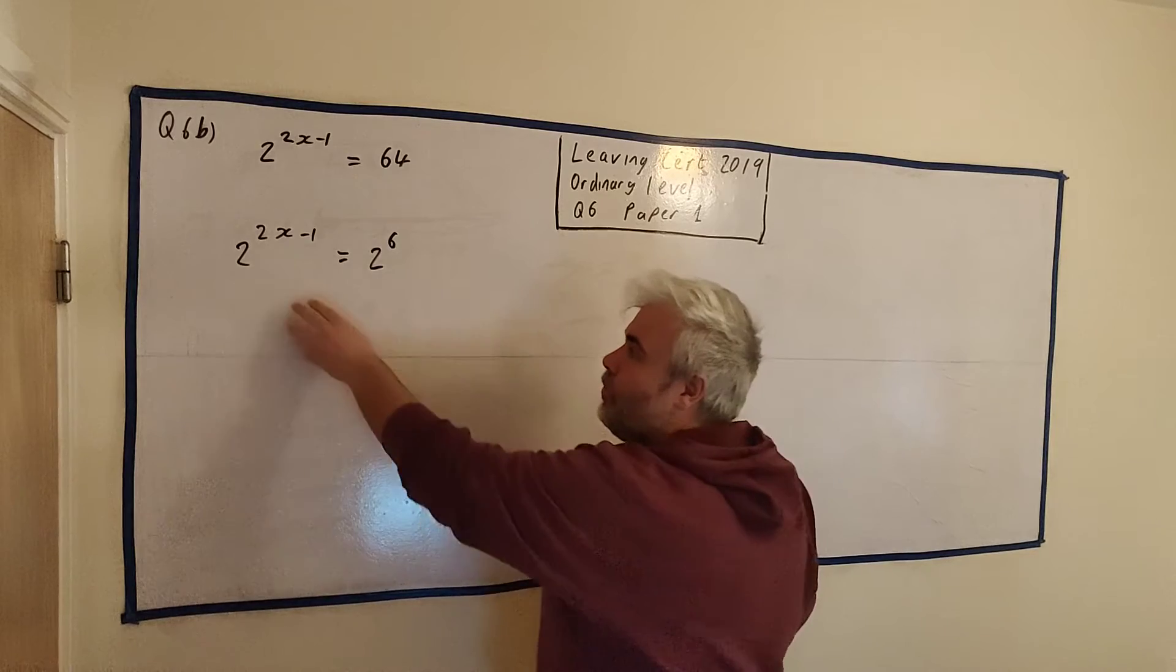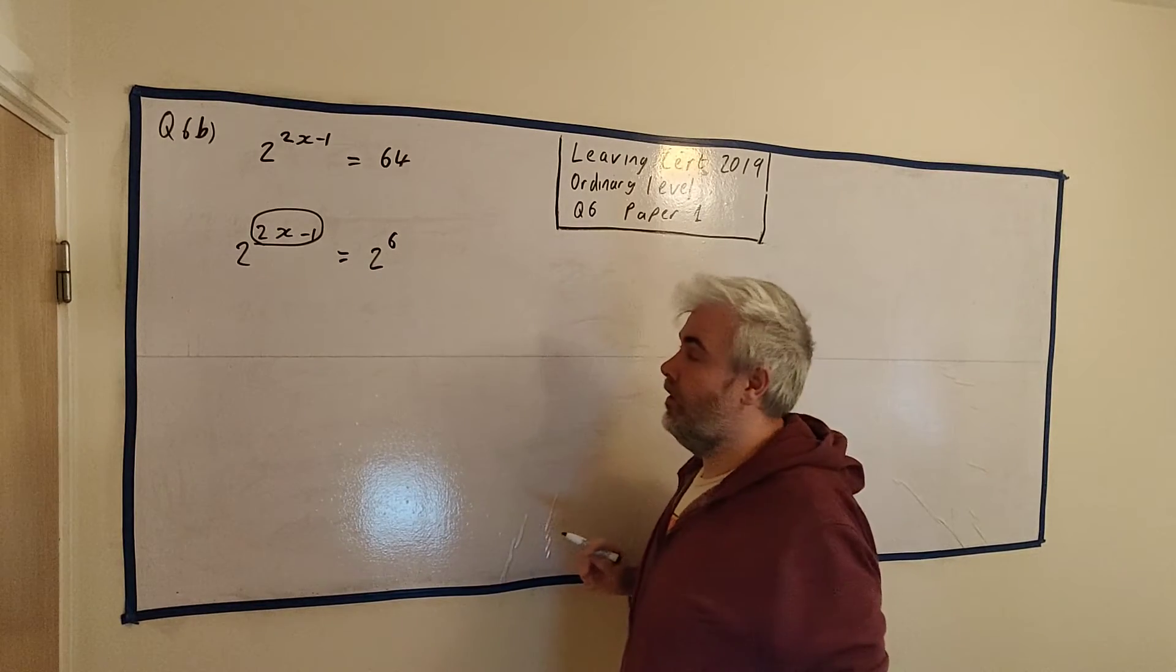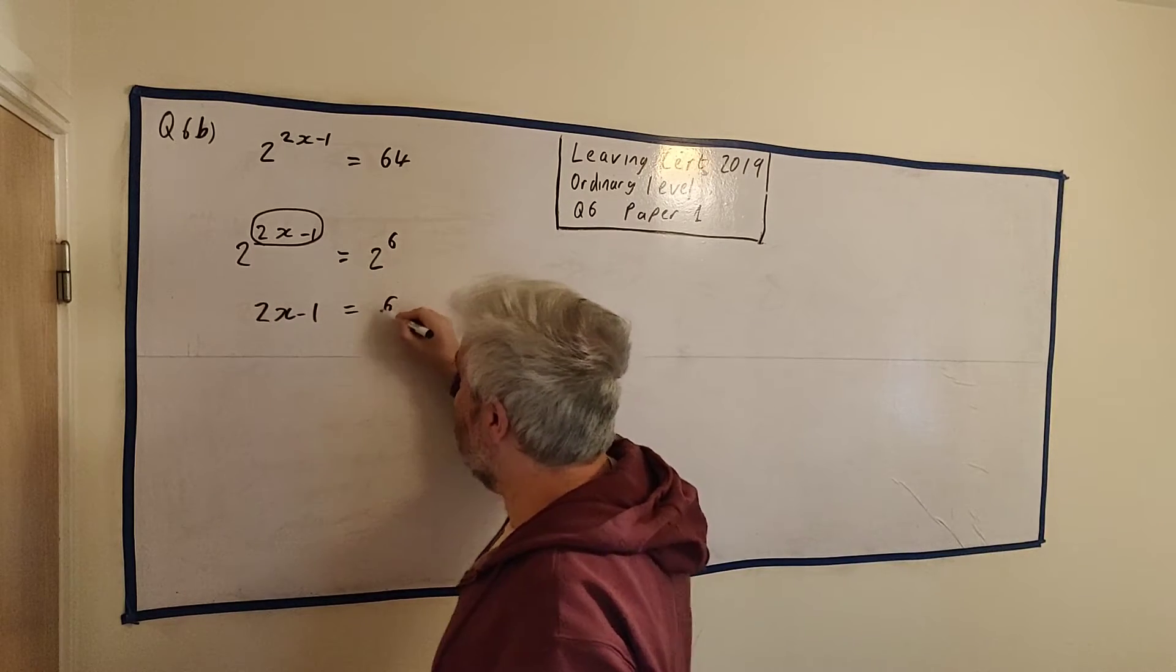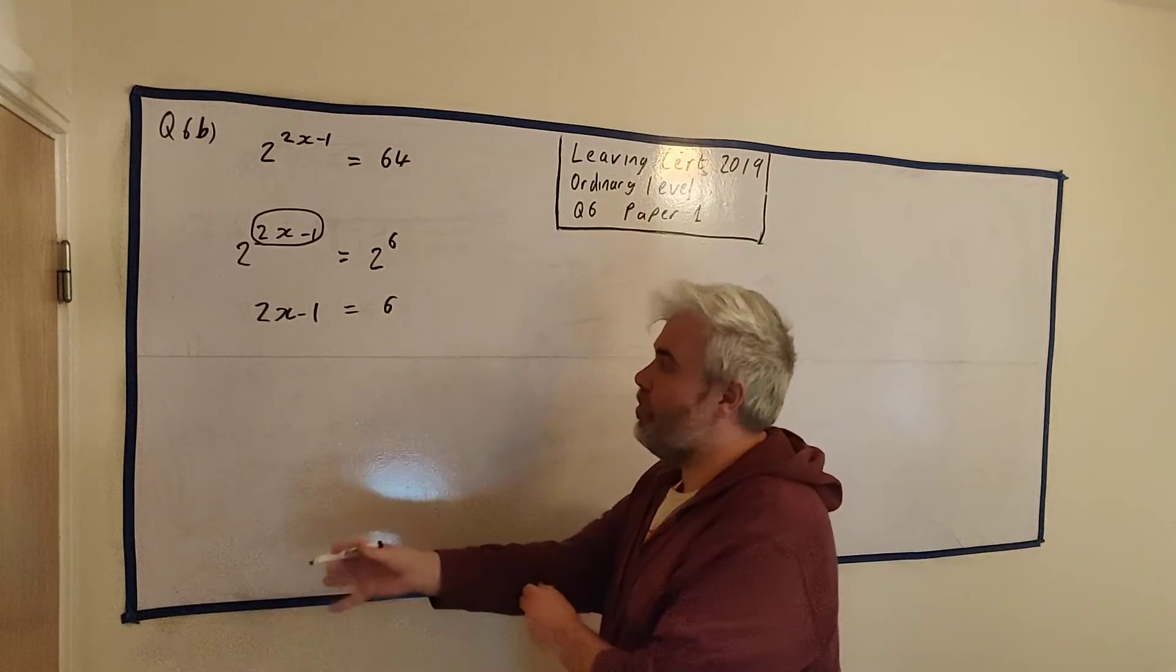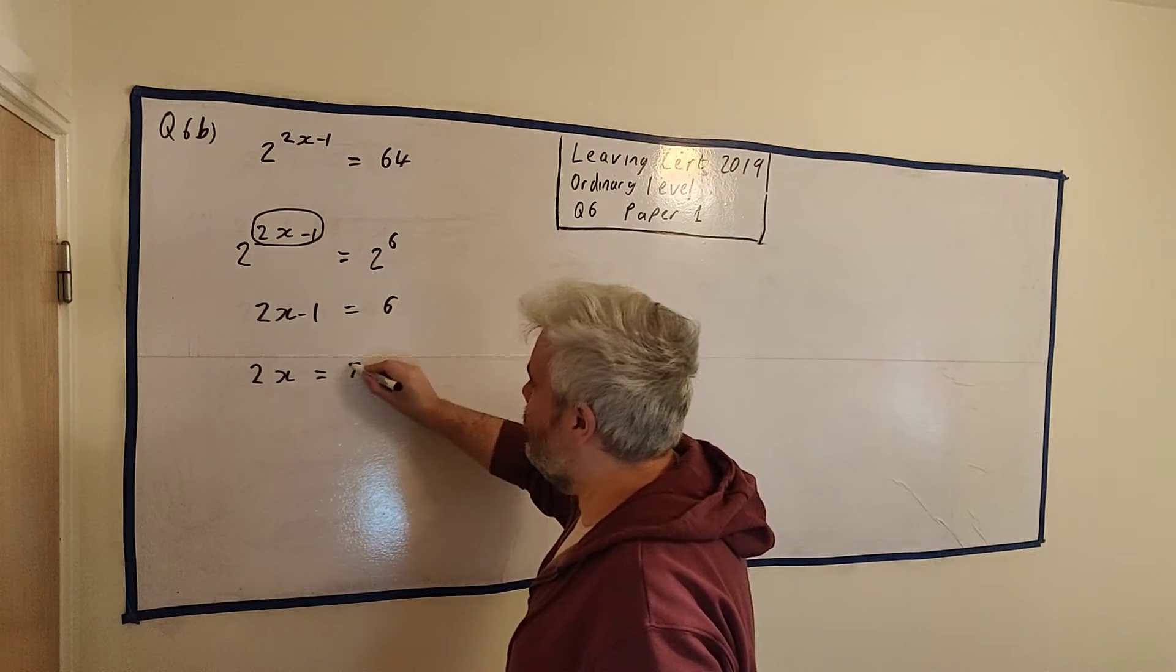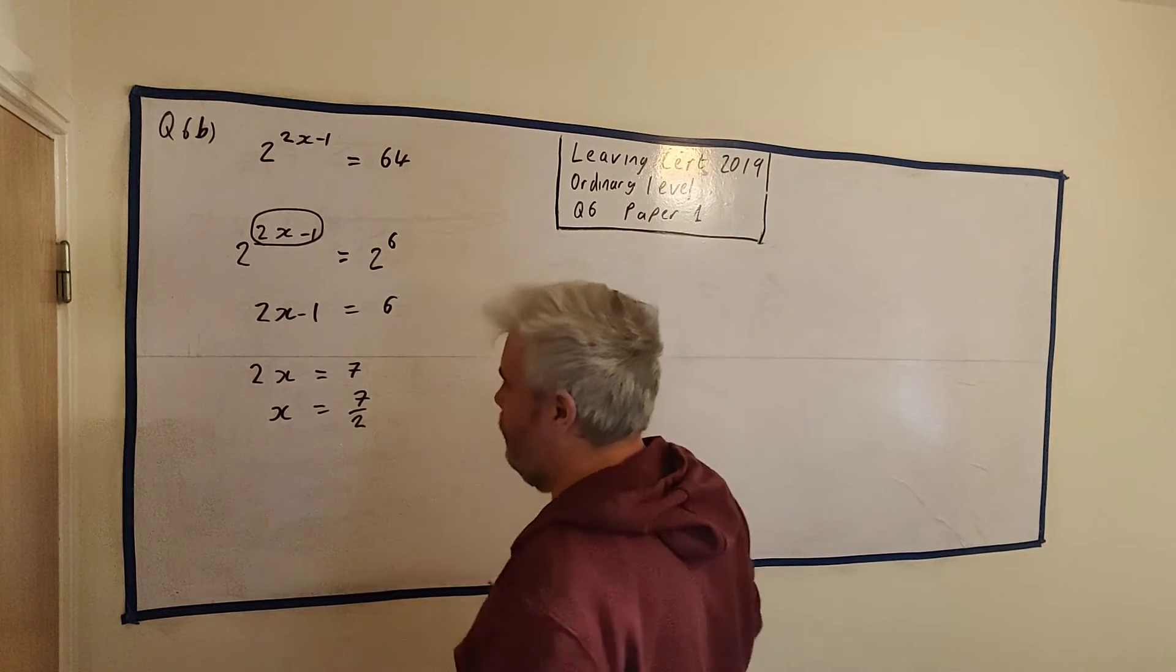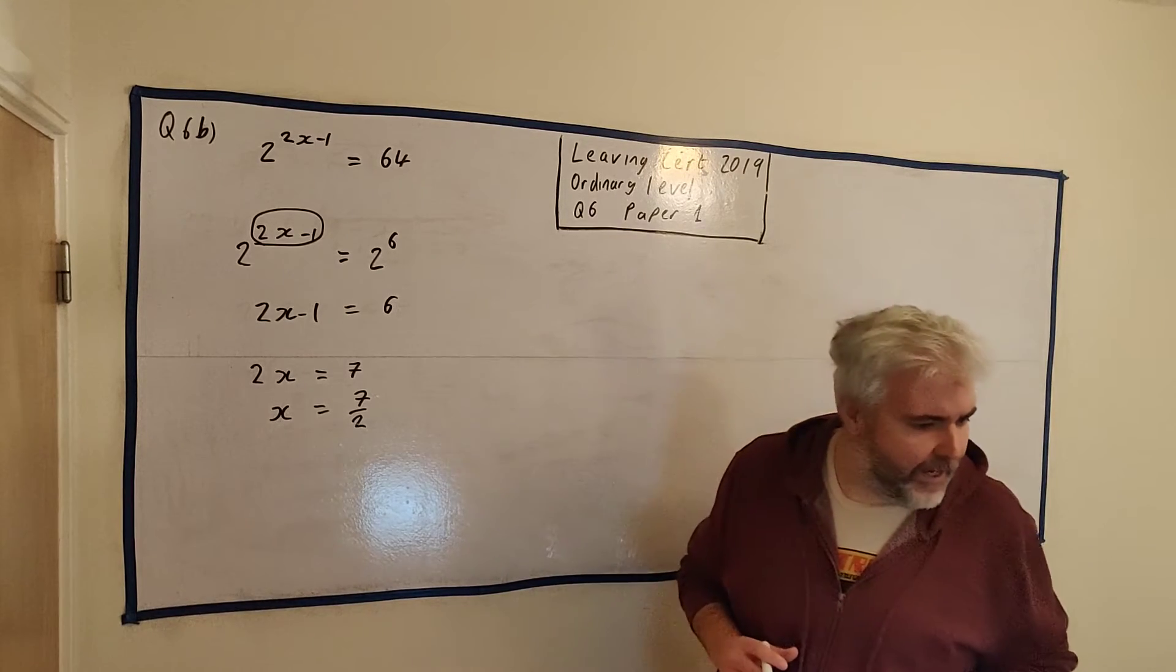At this point, 2 to the power of something is equal to 2 to the power of 6. Well, then this something must equal this 6. The 2s are the same. The only thing different was this part here. So that means this part must equal 6 because the 2s are the same. 2x - 1 = 6. This we can just rearrange. 2x, add 1 to both sides. We get the -1 disappears, and the 6 becomes a 7. Divide both sides by 2. We get x = 7/2. The 2 disappears, and 7 gets divided by 2.